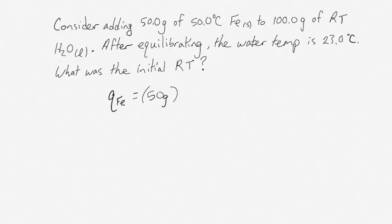Initially, the heat that came out of the iron is 50 grams times the specific heat capacity of iron, which is 0.45 joules per gram degree Celsius